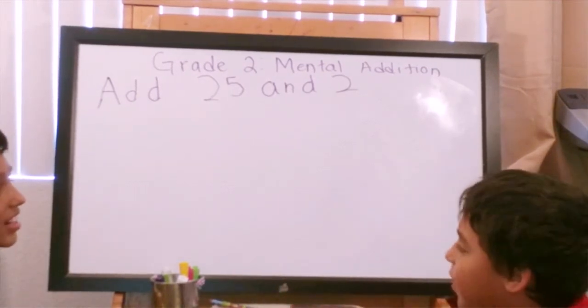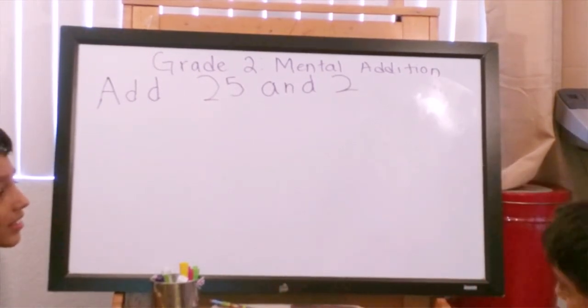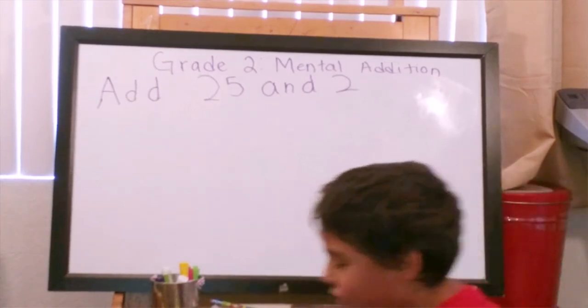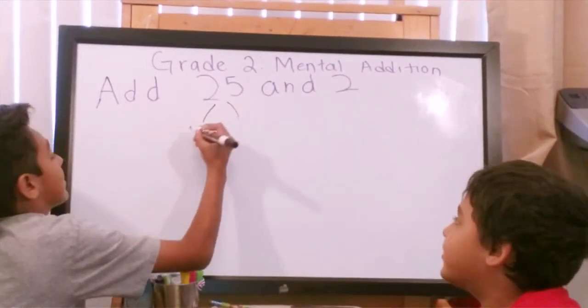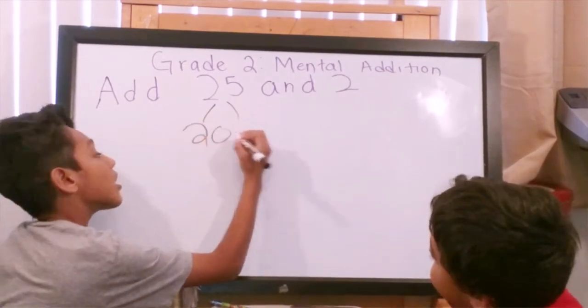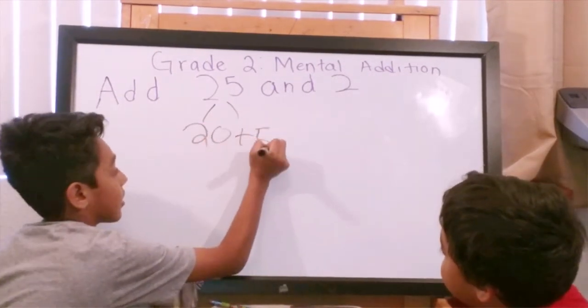So, this is our second problem and our final problem. I have twenty-five and two. So, twenty-five is twenty plus five.